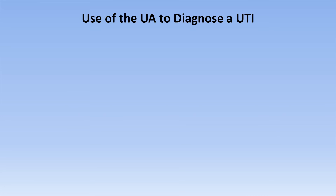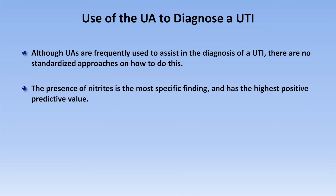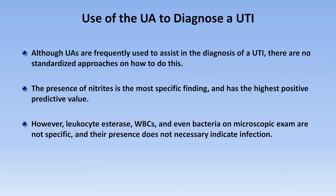I'm going to summarize how to use the UA to diagnose a UTI. Although UAs are frequently used to assist this diagnosis, there are no standardized approaches. The presence of nitrites is the most specific finding and has the highest positive predictive value. However, leukocyte esterase, WBCs, and even bacteria on microscopic exam are not specific, and their presence does not necessarily indicate infection. All of these, including nitrites, may be present with an indwelling urinary catheter even in the absence of pathologic infection — sometimes referred to as colonization, where bacteria may be growing on the catheter itself but not causing problems.